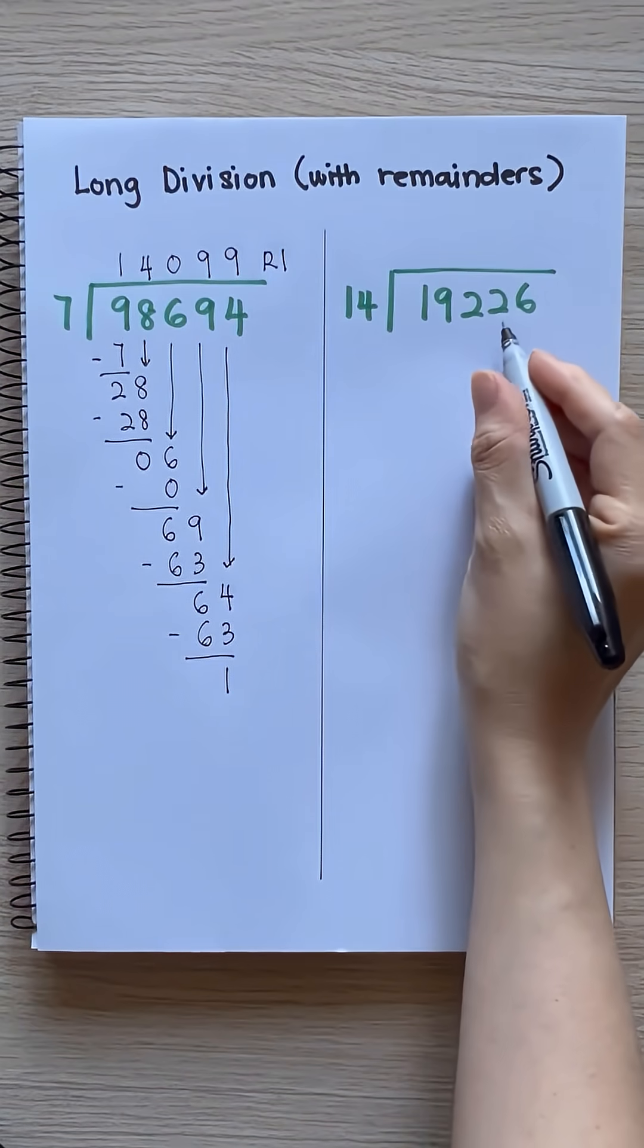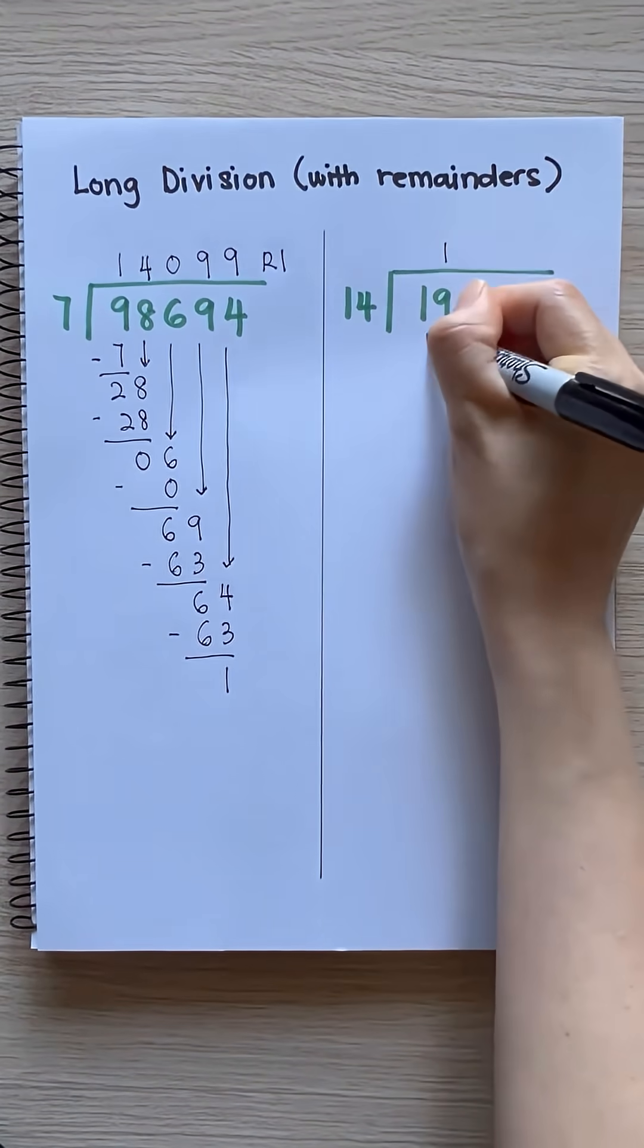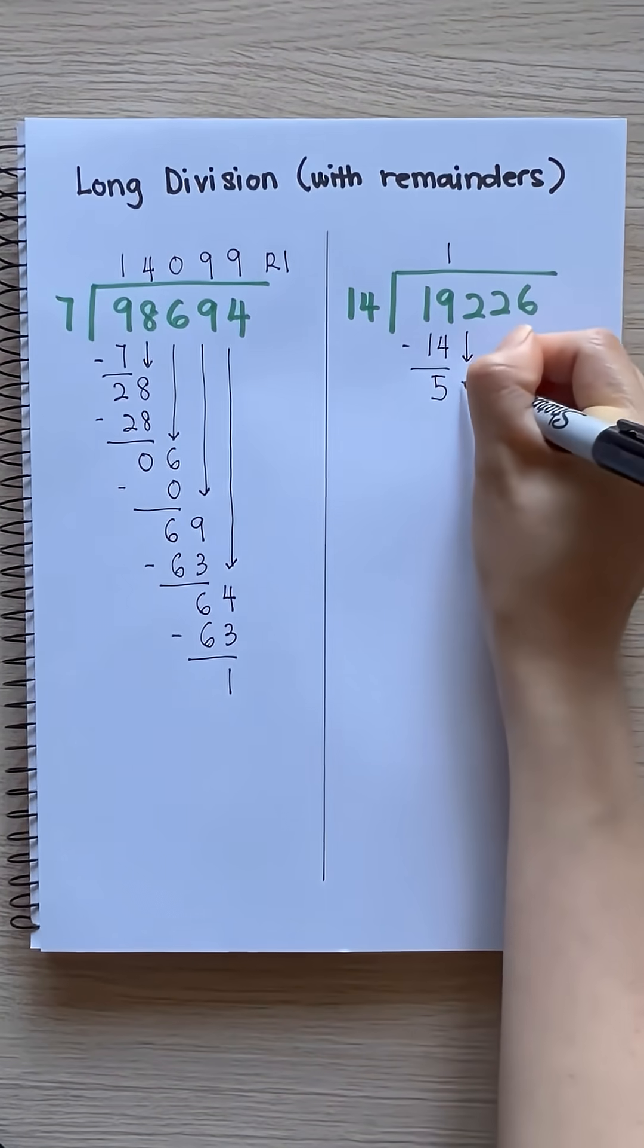19,226 divided by 14. 1 times 14 equals 14. 19 minus 14 equals 5. Bring down 2.